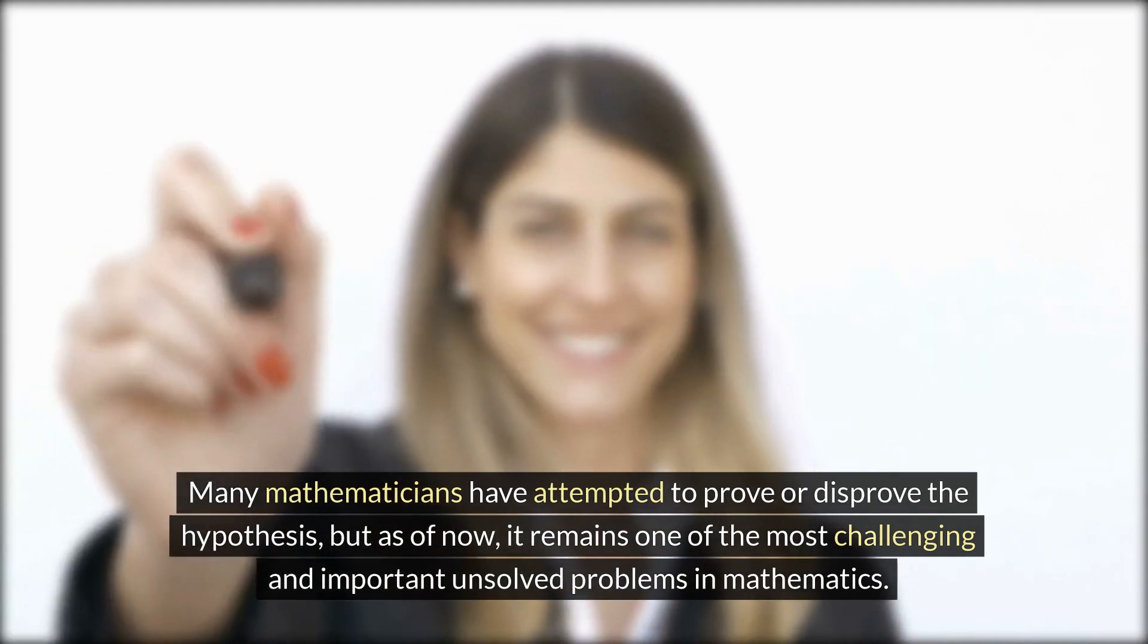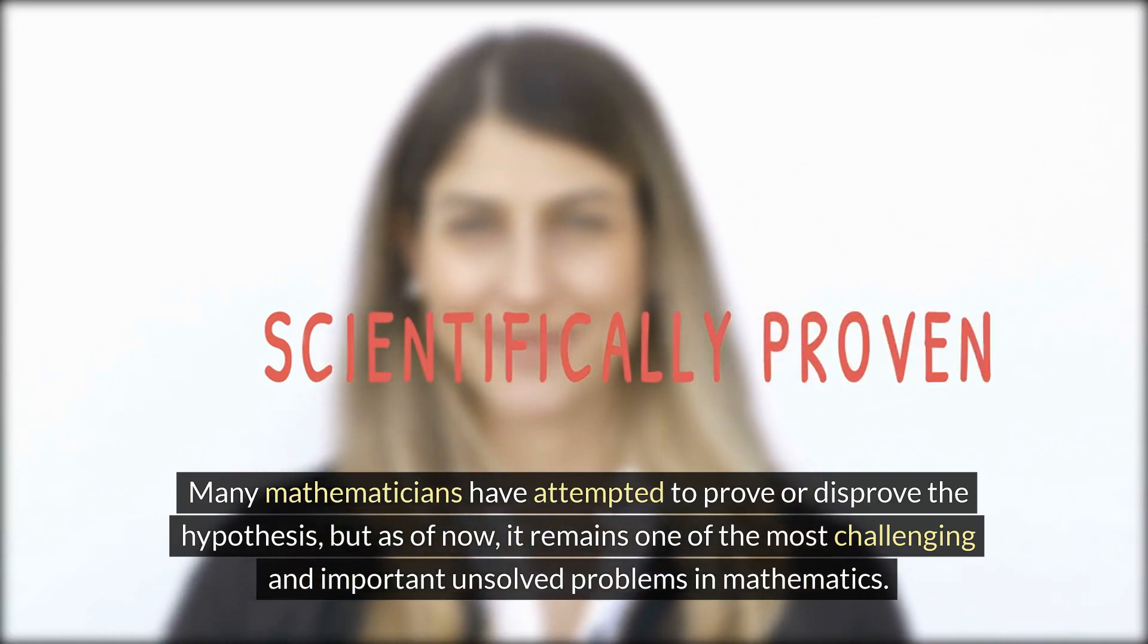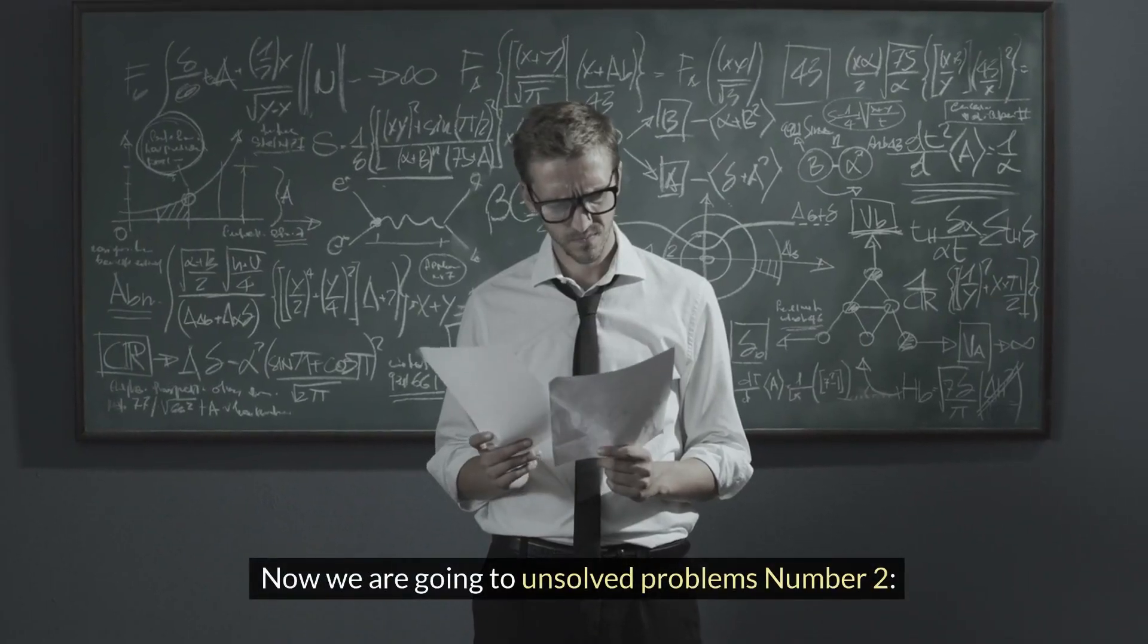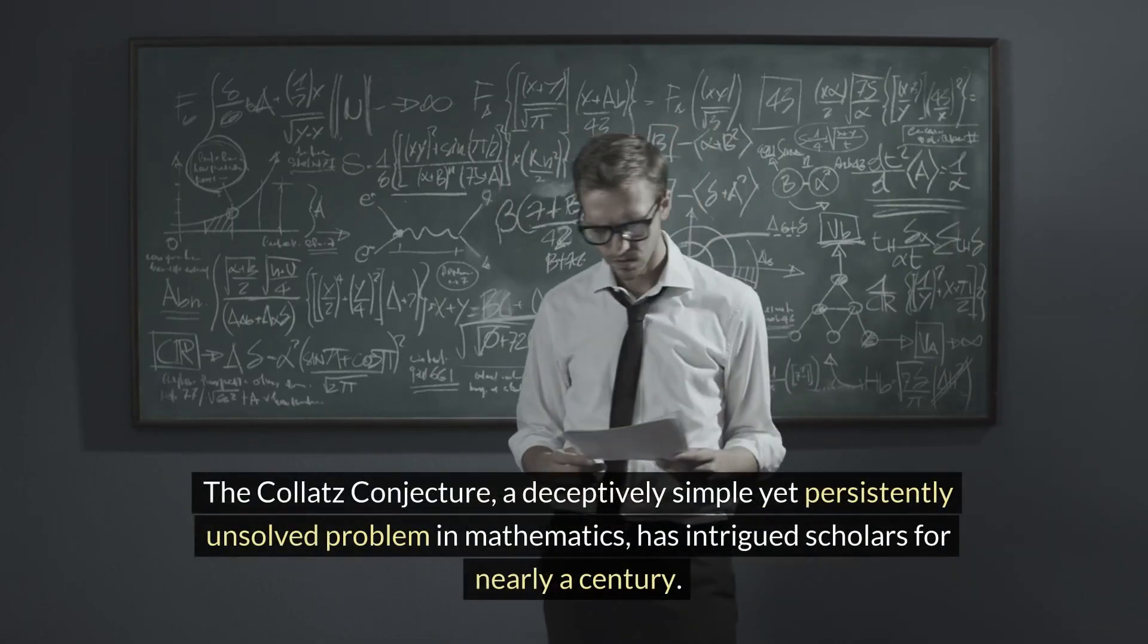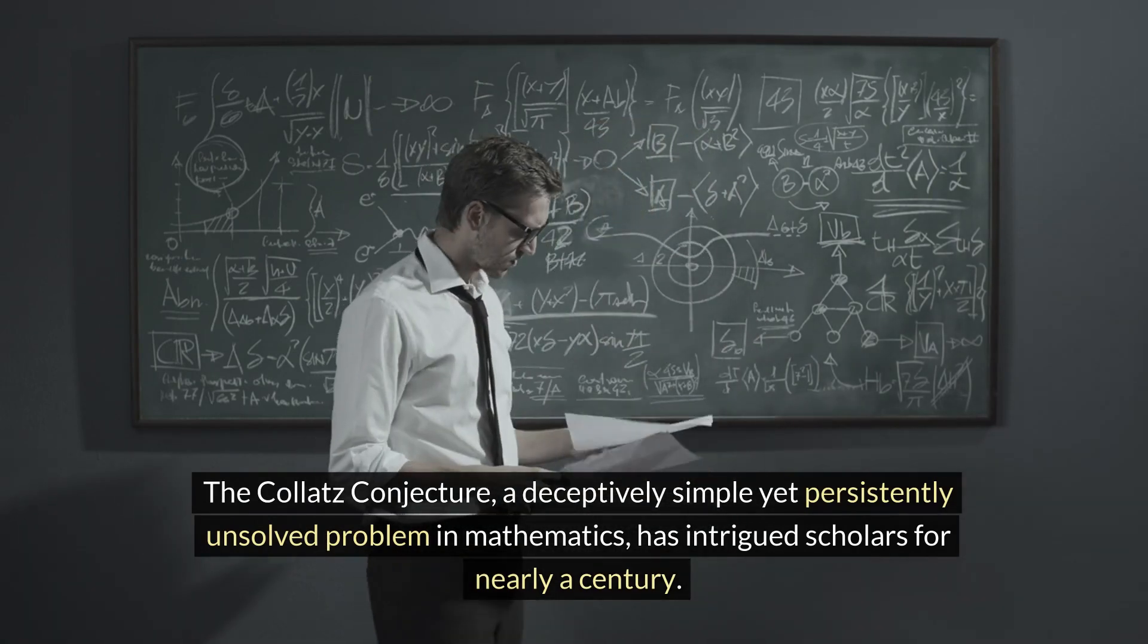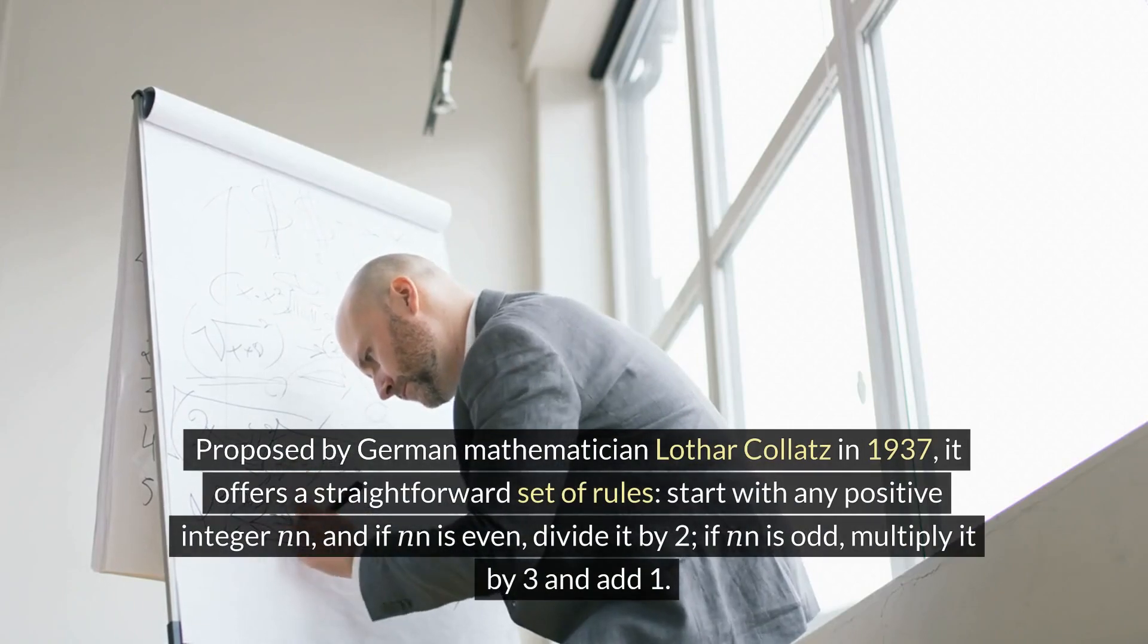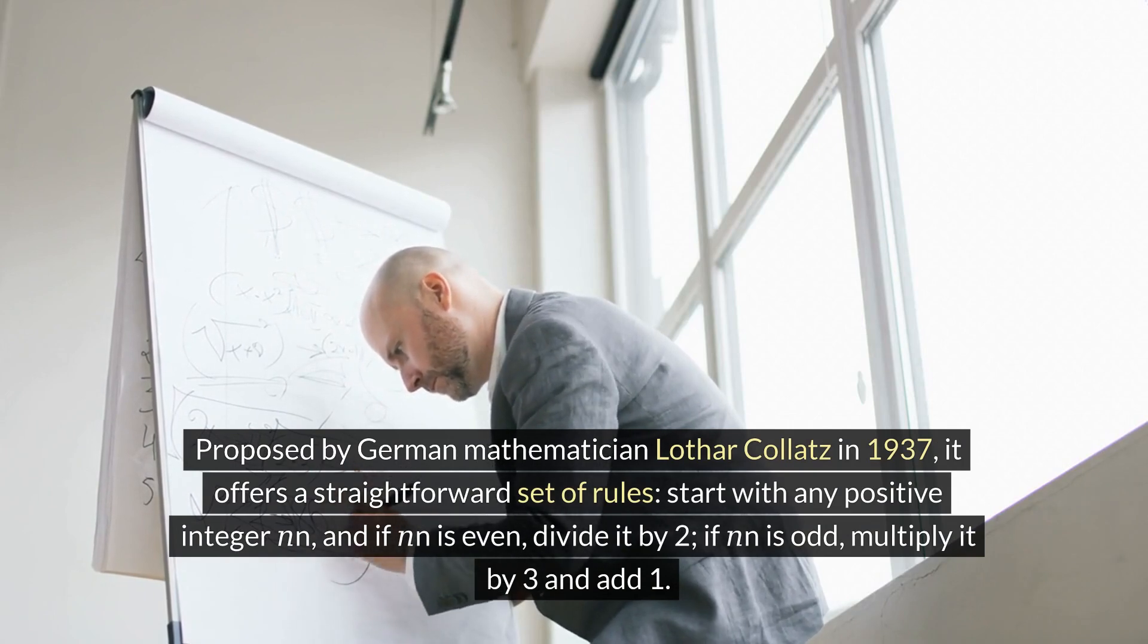Now we are going to unsolved problem number two, the Collatz conjecture. The Collatz conjecture, a deceptively simple yet persistently unsolved problem in mathematics, has intrigued scholars for nearly a century. Proposed by German mathematician Lothar Collatz in 1937, it offers a straightforward set of rules.